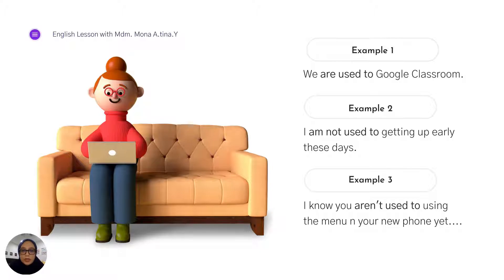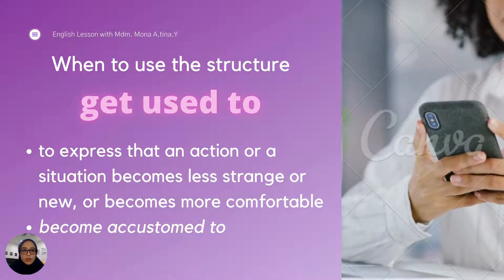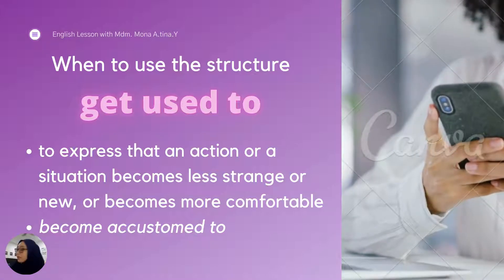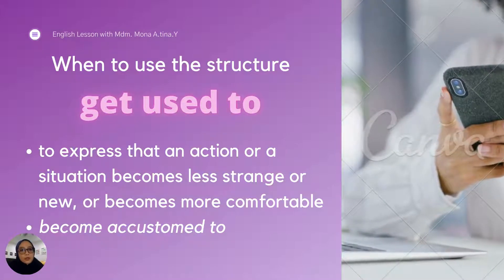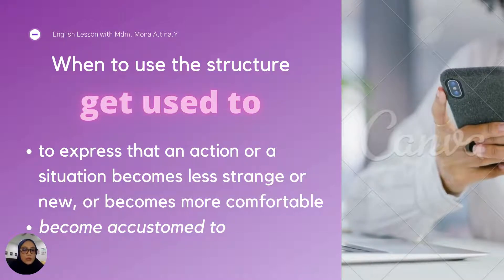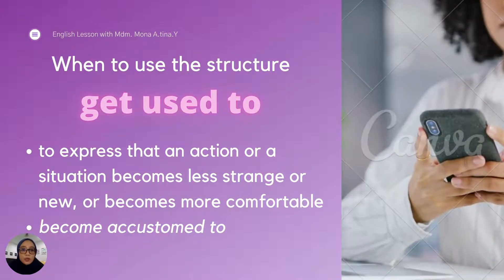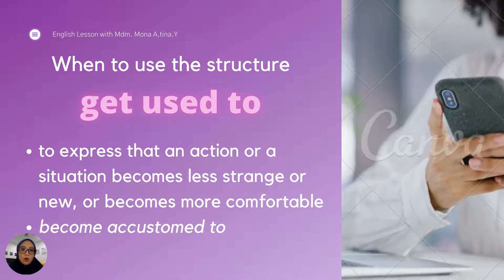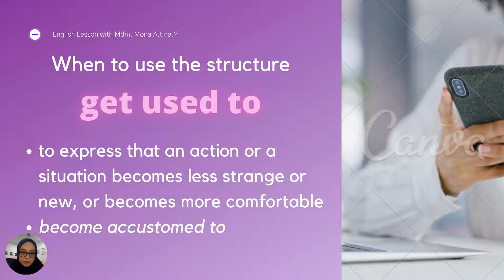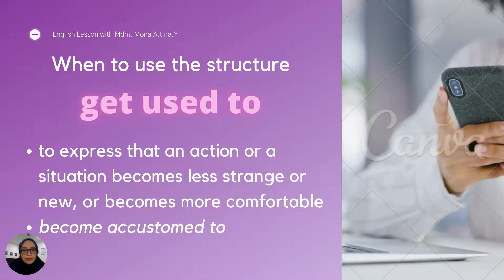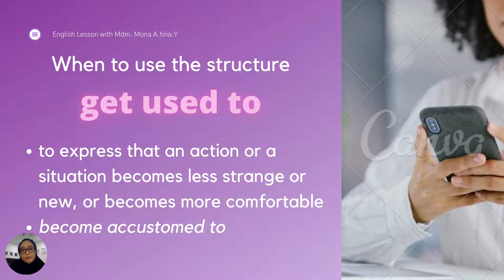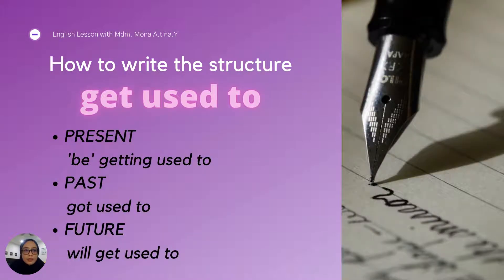So we are done with be used to. Now let's take a look at the last grammar component, which is the structure get used to. When are we going to use the structure get used to? We use it to express that an action or a situation becomes less strange or new, or becomes more comfortable - we are getting accustomed to it, getting familiar with it. There are three forms: present form, past form, and also future form.